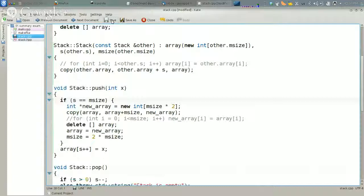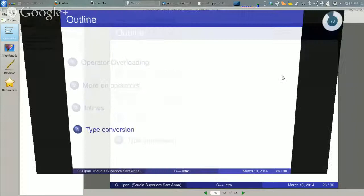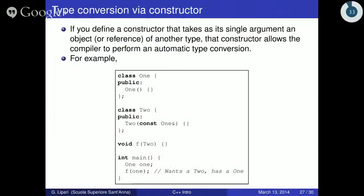Before concluding this lecture, we just go back to our slides and talk a little bit about type conversion. Type conversion means we have one thing of one type and we want to transform it into a different object of another type. This conversion can be done in many different ways, and one way is by using a constructor. So basically, when you define a constructor that takes one single argument, and this single argument is an object or a constant reference to another type, that constructor can be used by the compiler for performing an automatic type conversion.